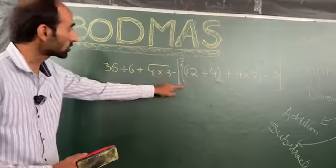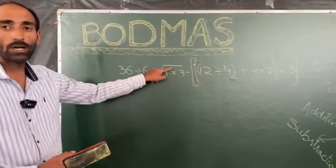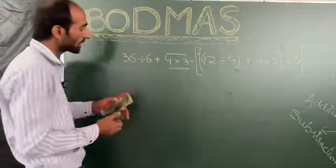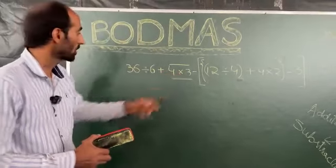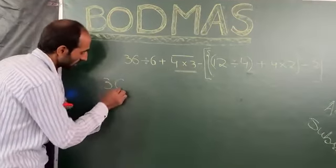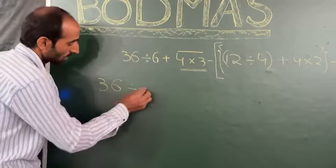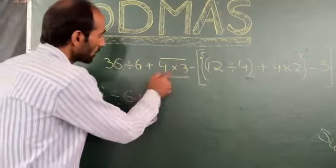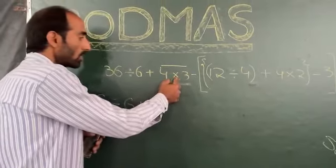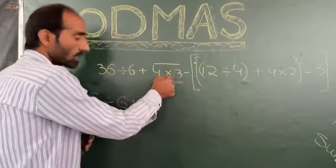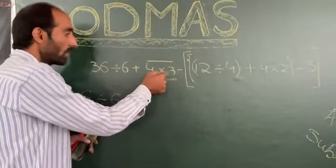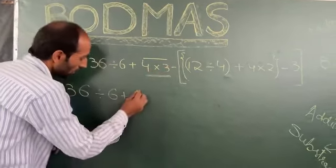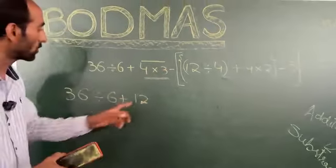So in this question, first we have to deal with the vinculum bar. We have to look at what type of operation is there and solve it first. We will write it as 36 divided by 6 plus... first we have to eliminate this one: 4 into 3. There is multiplication here, so we do 4 threes are 12.